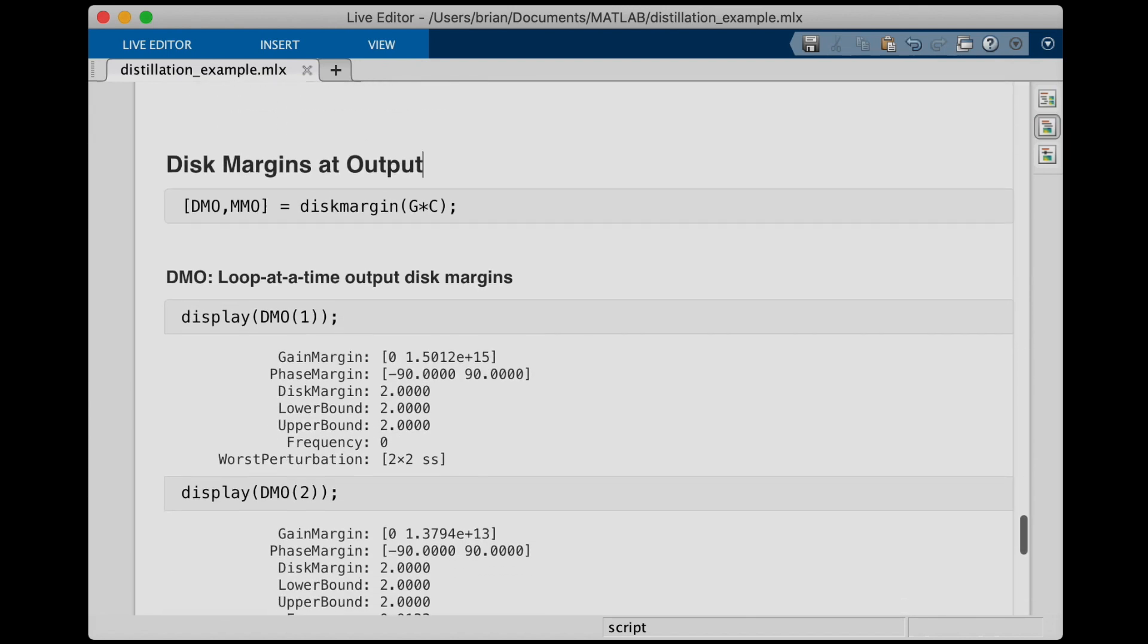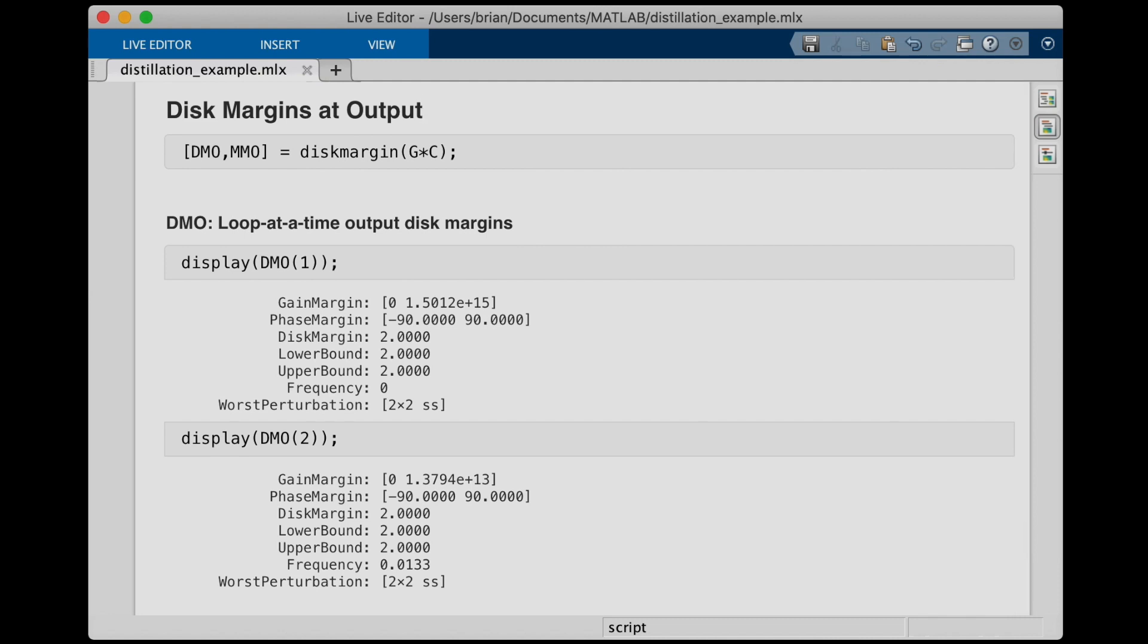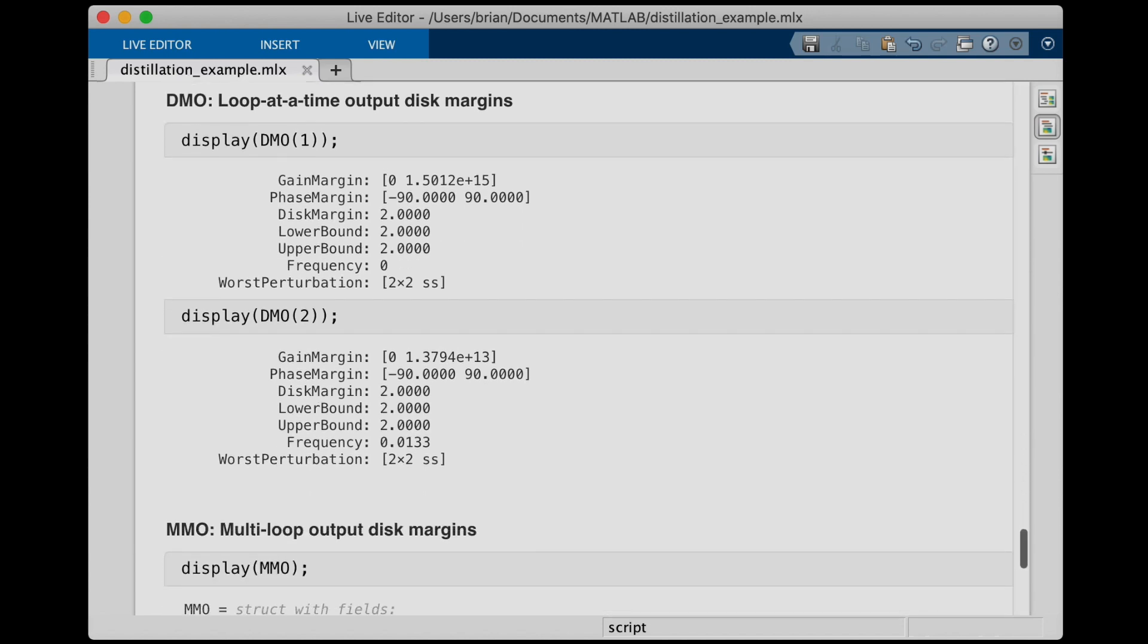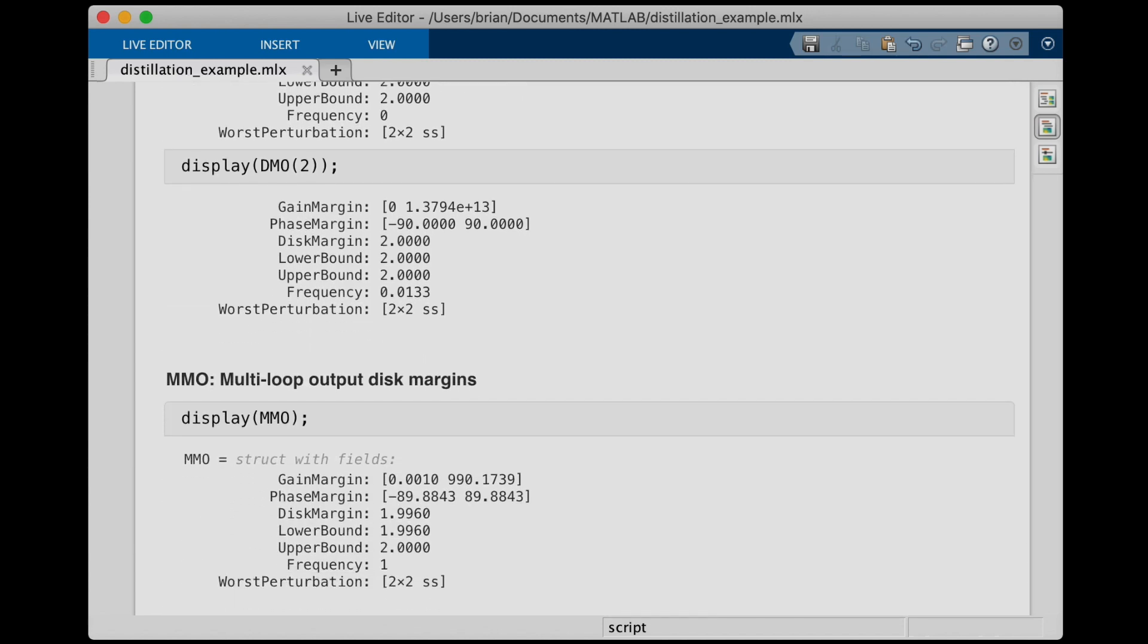And now if we look at disk margins at the output, the story, well, it's the same since again it's decoupled. The outputs can vary one at a time or simultaneously, and in both cases we have practically infinite gain margin and 90 degrees of phase margin. So, this is boding pretty well for our controller design.